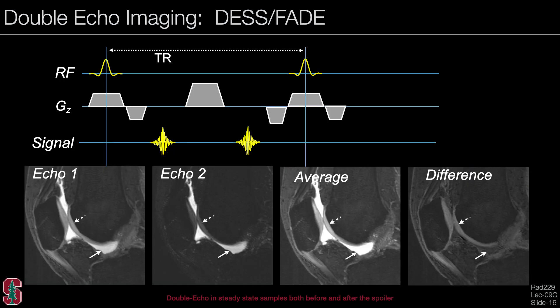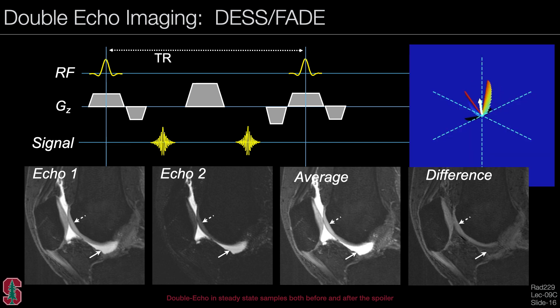Combining both approaches gives double echo imaging, known as DES (double echo in steady state) or FADE (fast acquisition with double echo). Here, a gradient spoiler is applied in the middle of the sequence and the signal is sampled immediately before and after it. In knee images, echo one and echo two are shown: cartilage is not as bright in echo two due to increased T2 contrast, while fluid shown by the solid arrow is almost equally bright. You can average the images to improve SNR or take a difference image to suppress fluid.